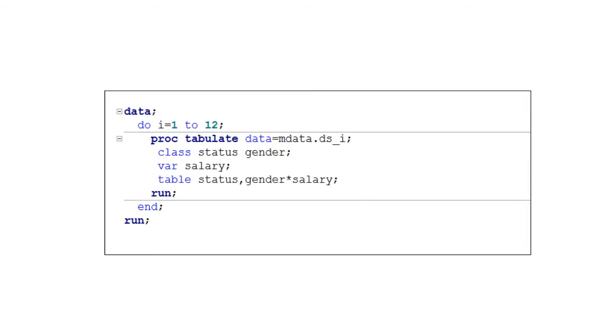In the last example, we have a program which attempts to perform 12 tabulations on monthly data sets named DS1 through to DS12. In our first attempt, a data step do loop is used to repeat a PROC tabulate for each table. Unfortunately, this program suffers from the same problem we saw earlier, where a PROC step is embedded within a data step. Errors relating to an unclosed do loop and an end statement floating in open code will be reported in the log.